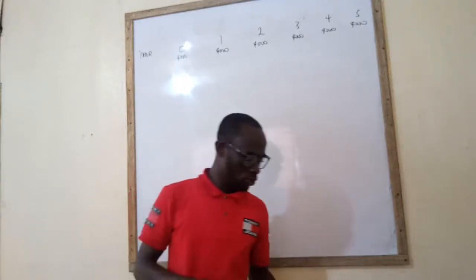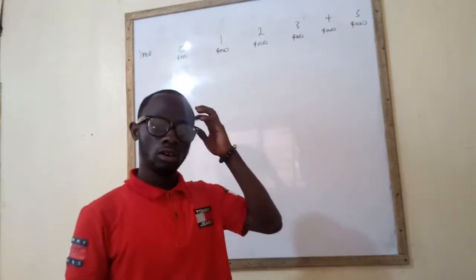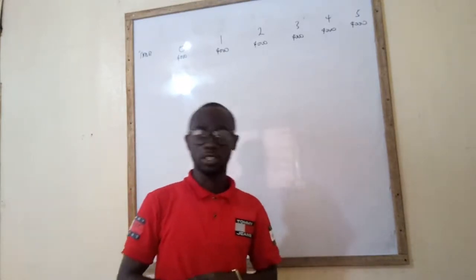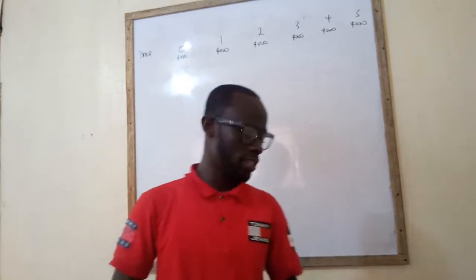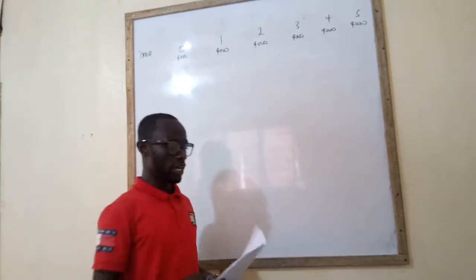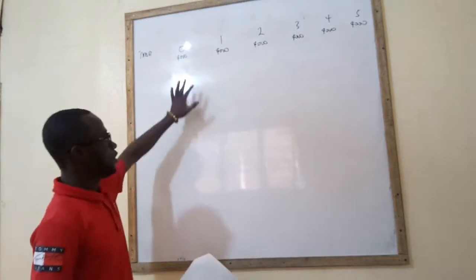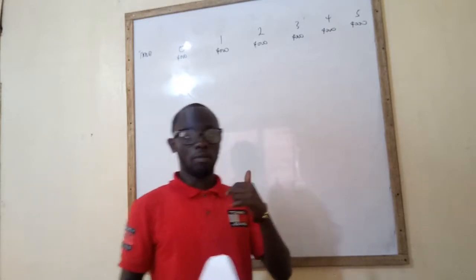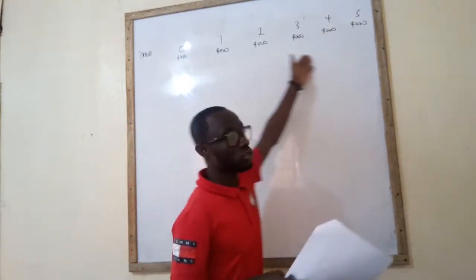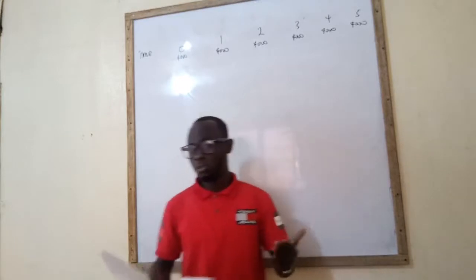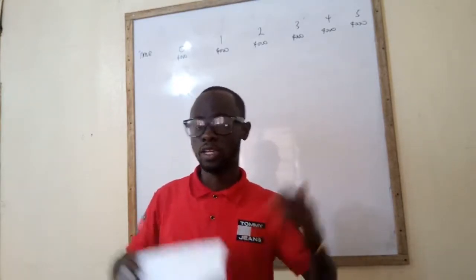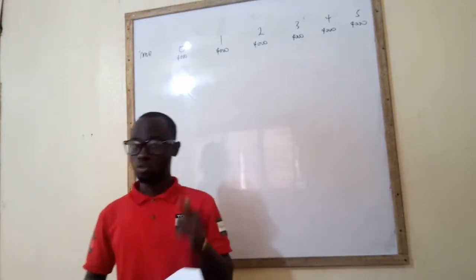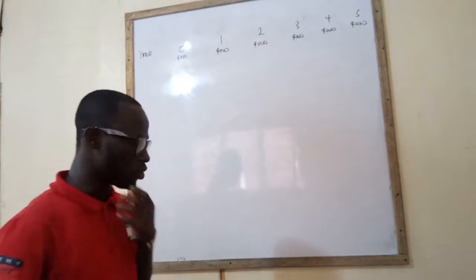Let's put the solution together now from the workings we did — the four workings we did — and the other statements made by the examiner in the question. Since our tax is paid immediately and the project life is five, it means our timeline will also be about five. But if the tax was supposed to be paid one year in arrears, we would have added one period to make it six, but it's not so.